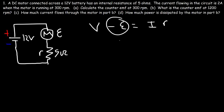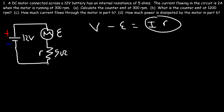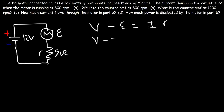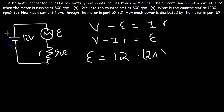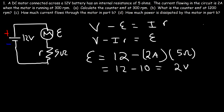Rearranging the formula V minus counter EMF equals IR, we move the counter EMF to one side and IR to the other: counter EMF equals V minus IR. So the counter EMF equals the battery voltage of 12 minus the current of 2 amps times the resistance of 5 ohms. Two times 5 is 10, and 12 minus 10 is 2, so the counter EMF equals 2 volts when the motor is spinning at 300 RPMs.